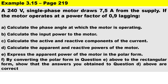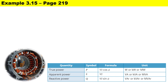In this calculation, taken from example 3.15, it is a calculation for a single-phase AC motor. The question reads as follows: a 220-volt single-phase motor draws 7.5 amperes from the supply. The motor operates at a power factor of 0.9 lagging, and we have quite a few questions to answer.